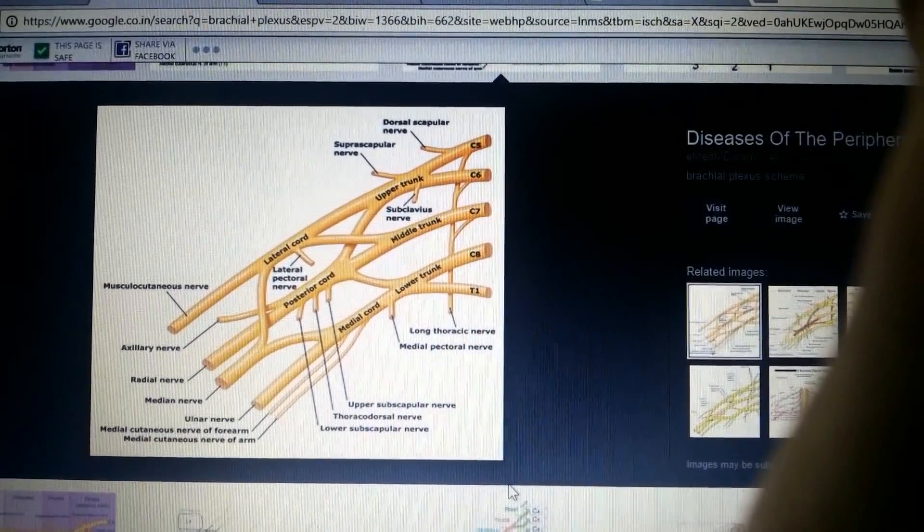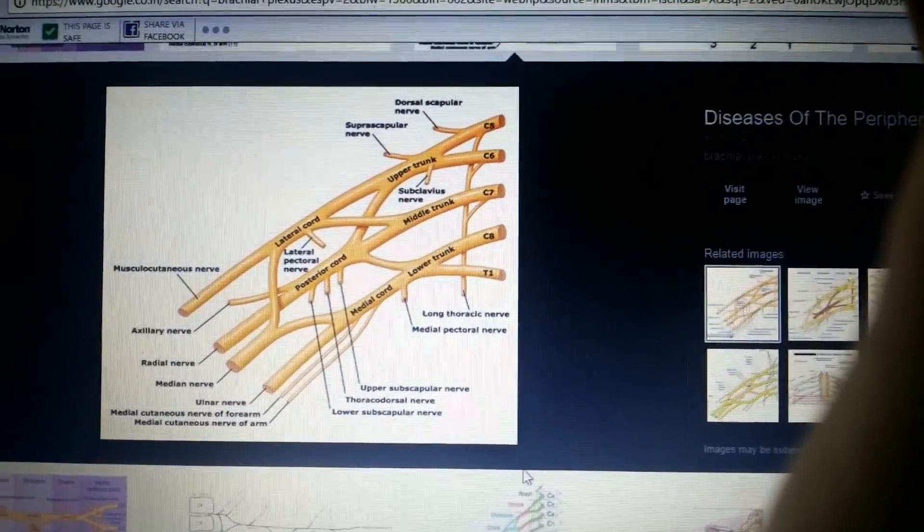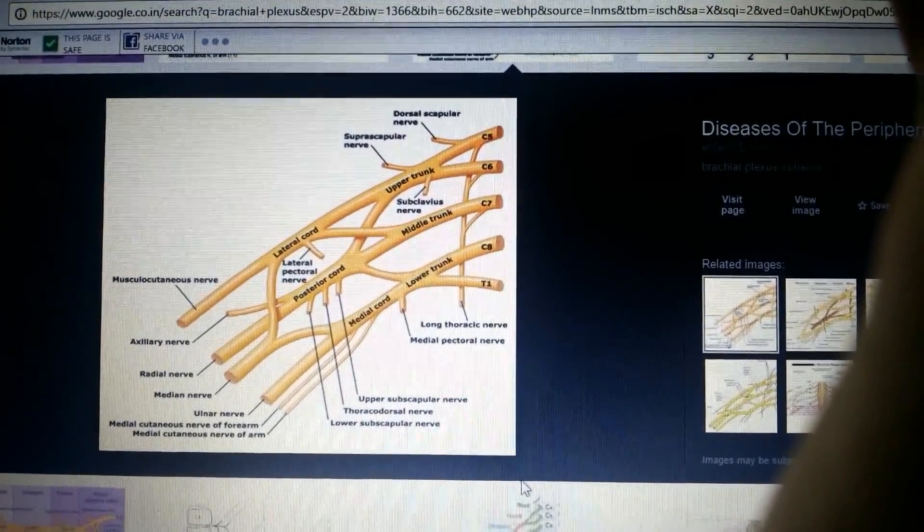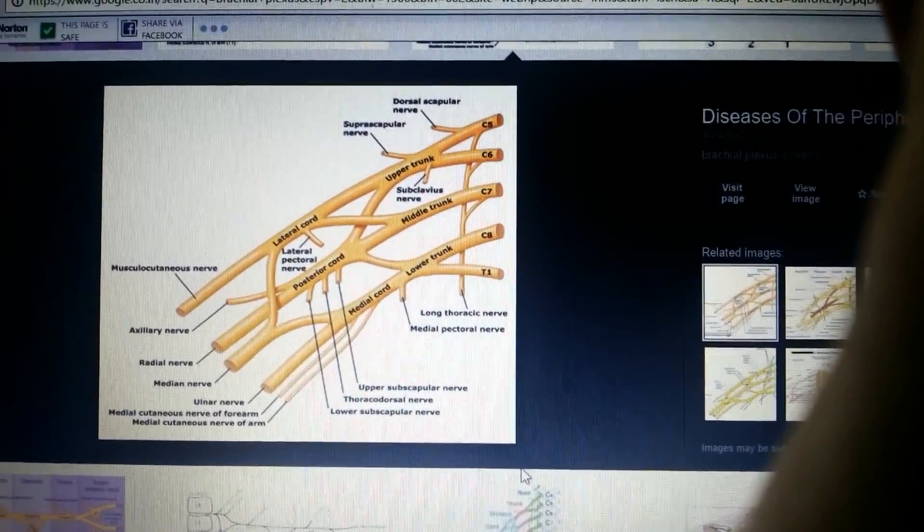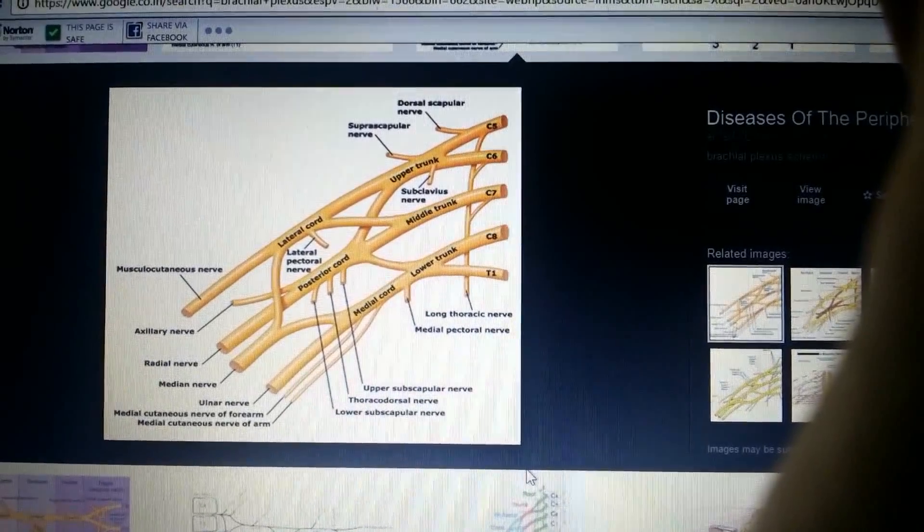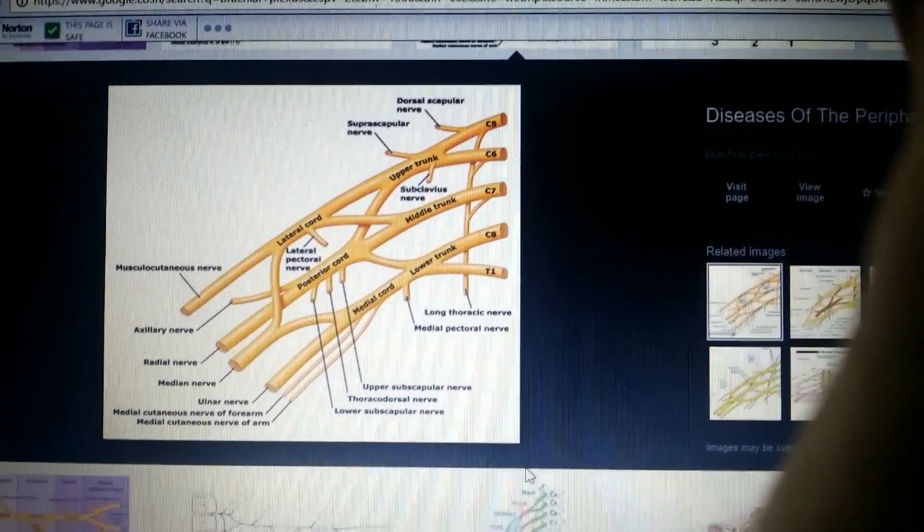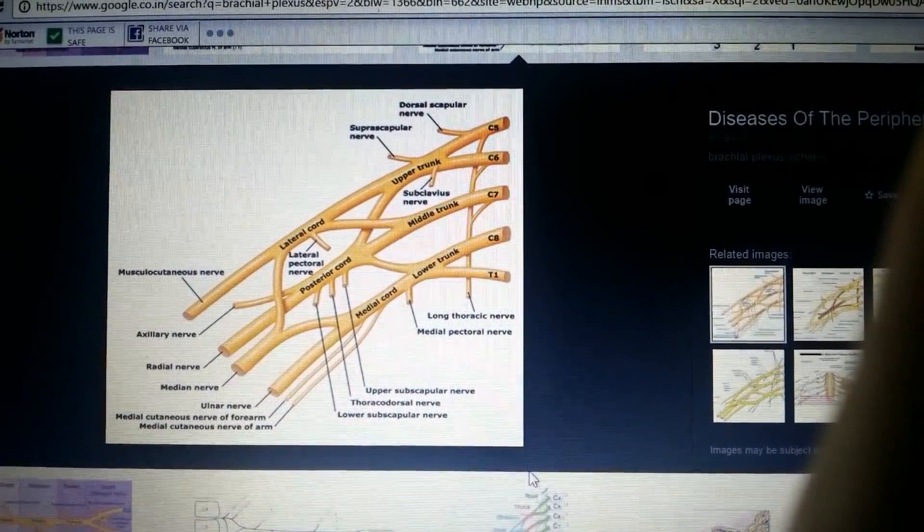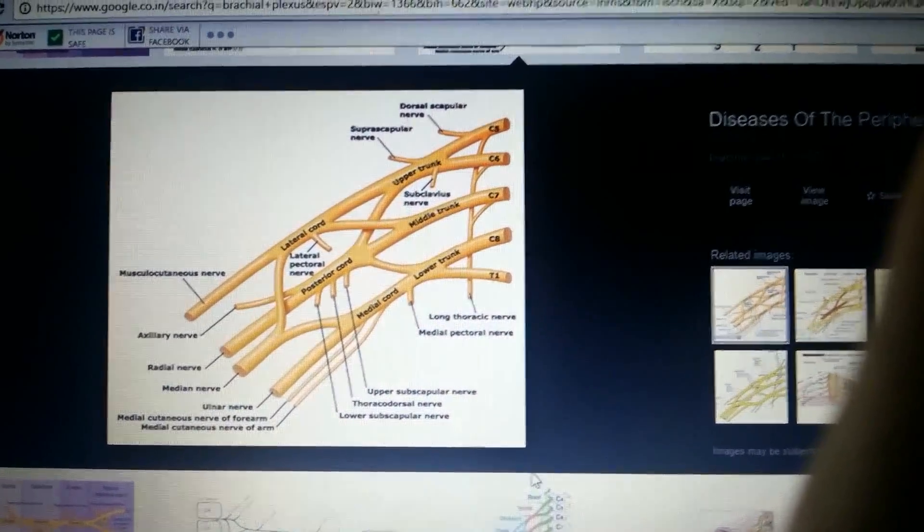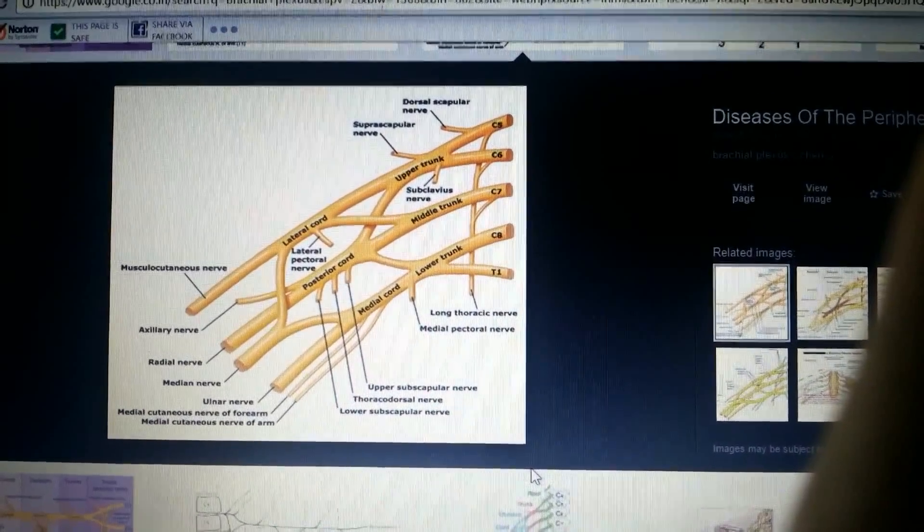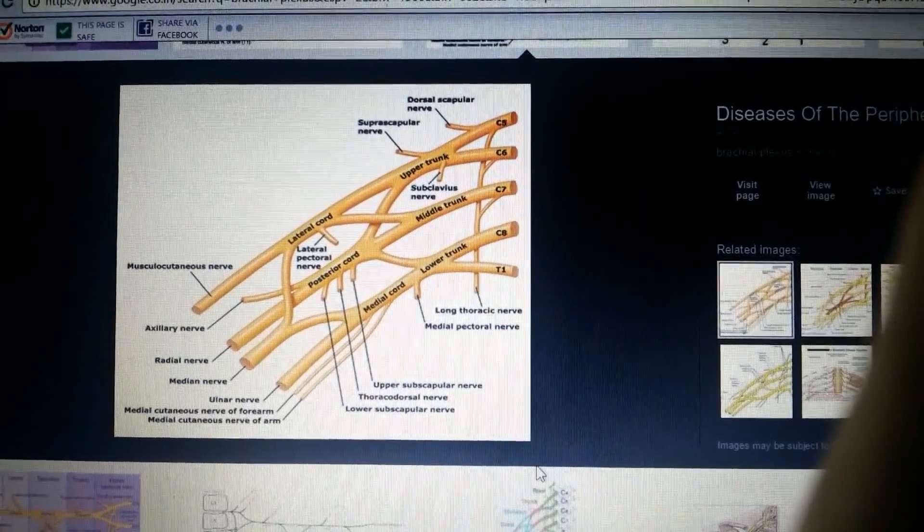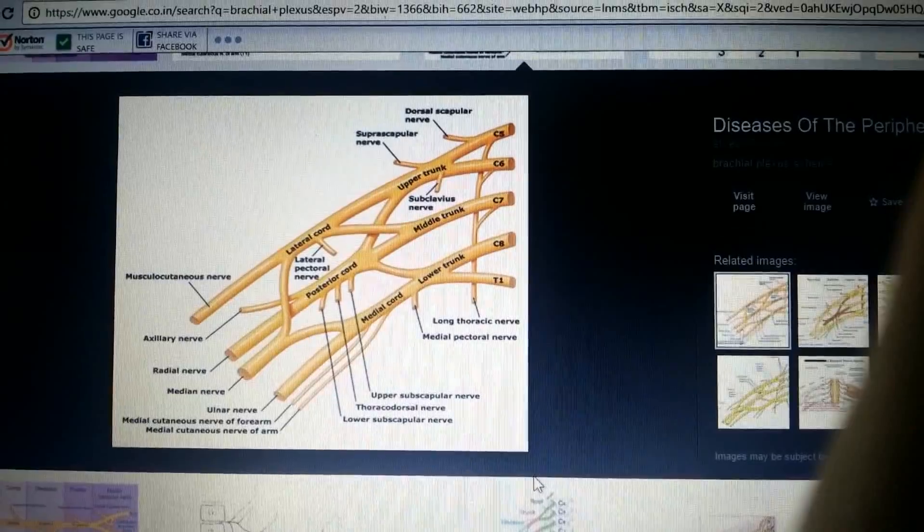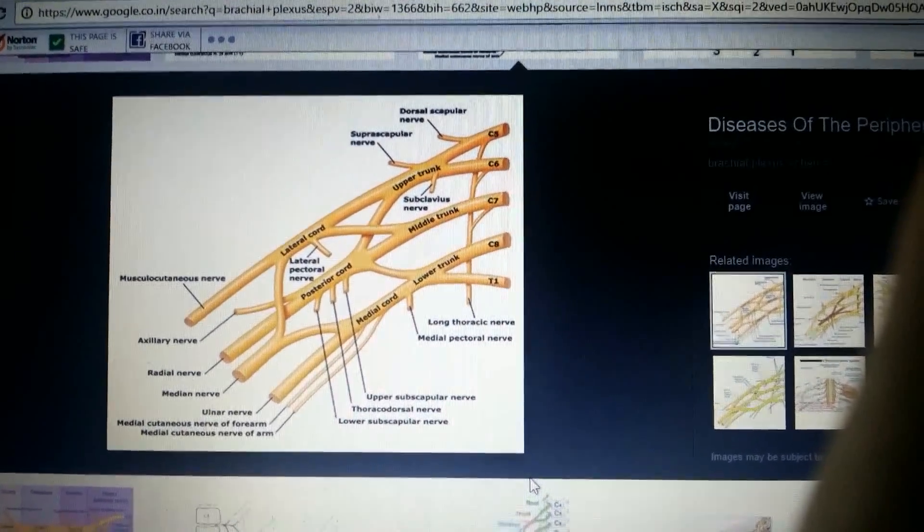From the upper trunk we have two nerves: suprascapular nerve and subclavius nerve. C7 continues as middle trunk, whereas C8 and T1 continue as lower trunk.